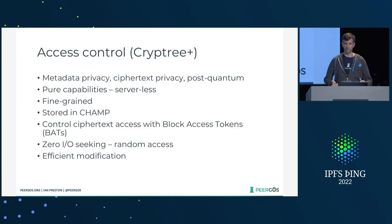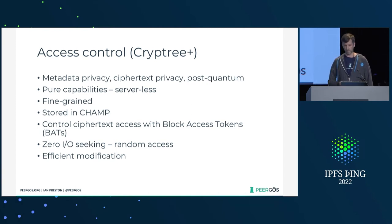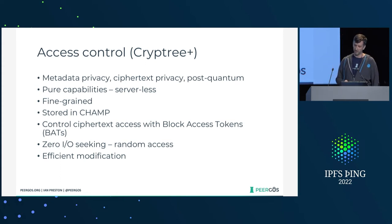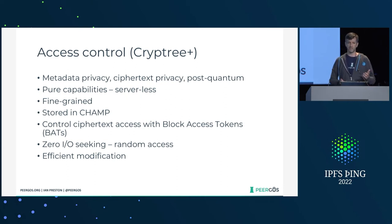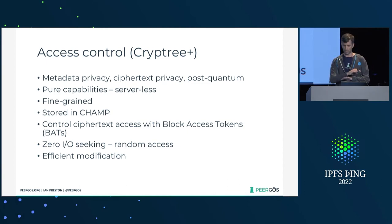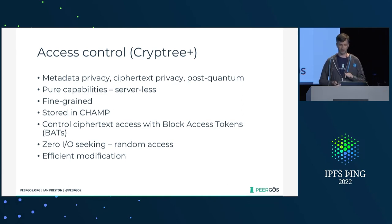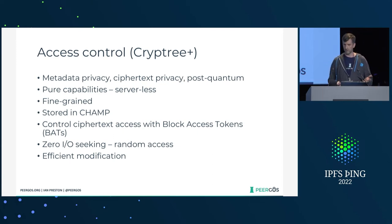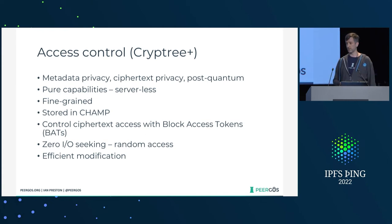With a file system, especially a social one, you need access control. We do that with a thing called Cryptree Plus. You've heard Cryptree several times today already. The 'plus' means we've added a bunch of things on top of the initial 2008 version, including metadata privacy, ciphertext privacy, and made it post-quantum. It's pure capabilities — you don't need to rely on a server to enforce access control. It's fine-grained, and it's also stored in a CHAMP.